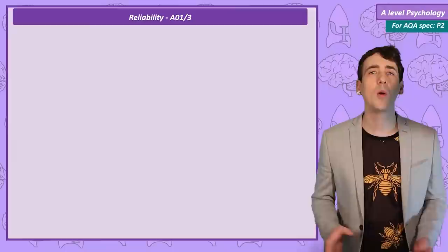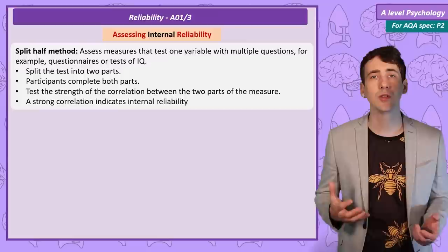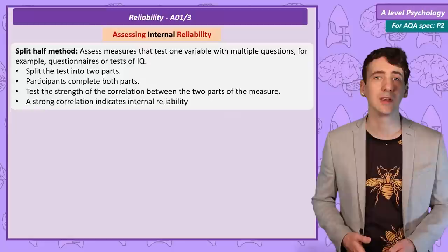Assessing reliability. What we have just discussed is called the split half method, and it is a way to assess the internal reliability of a measure such as the questionnaire. We split the measure into two parts, and then get the participants to complete both parts, and then check how strongly the results of each half of the test correlate with the other half. A strong correlation indicates internal reliability.